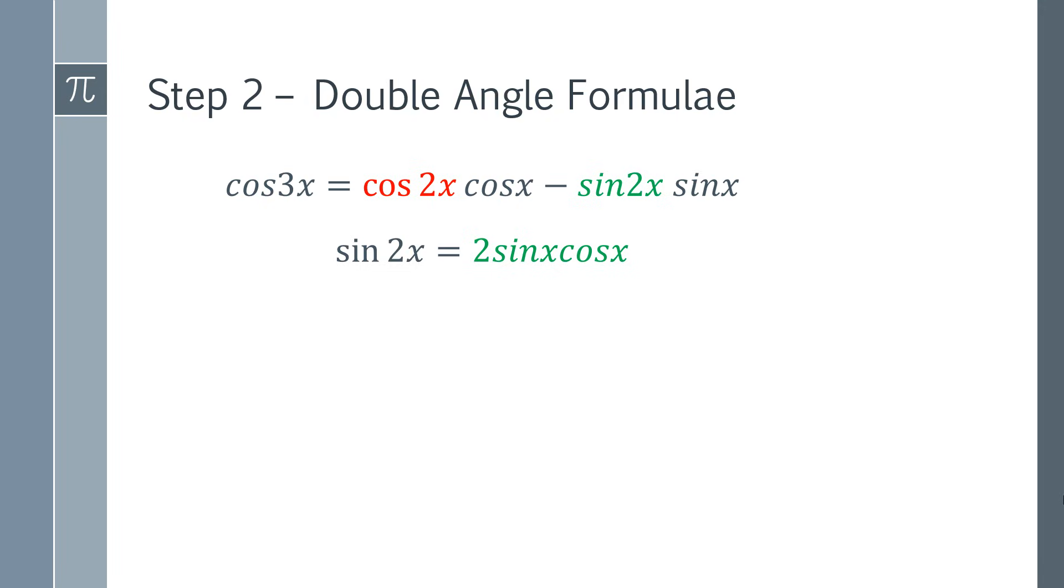So sin 2x can be written like this using a simple identity, and then cos 2x is also equal to another identity. And I've color coded these to make it easy to see the substitution. So I'm going to replace the cos 2x with the red text, and I'm going to replace the sin 2x with the green text. And then we can do that simple substitution.